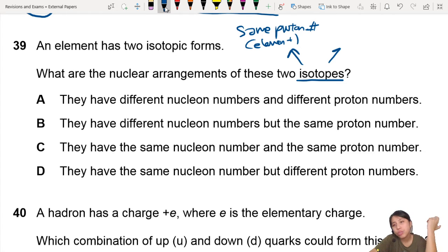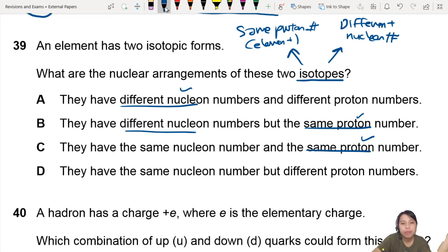But they are isotopes because they have different nuclear number. They have more neutrons, they have less neutrons. So, with that in mind, you have to look. Same proton number, different nuclear number. So the best choice is B.